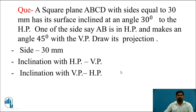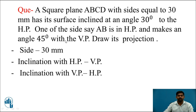Before starting the problem, read the problem carefully and note down the given data. The side of the square is 30mm. Second, the surface is inclined at an angle of 30 degrees to the HP — inclination with the HP is drawn in the VP. The second condition is: side AB is in the HP and makes an angle of 45 degrees to the VP — inclination with the VP is drawn in the HP. This is the basic criteria for drawing the problem.